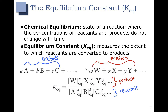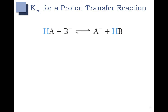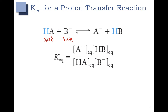Let's look at some specific examples. For a proton transfer reaction, you have an acid and you have a base. If we were to write out the equilibrium expression, remember that it's the concentration of the products over the concentration of the reactants. So our equilibrium expression for this reaction would be the concentration of A- times the concentration of HB, over the concentration of HA, our acid, and the concentration of B-, our base.